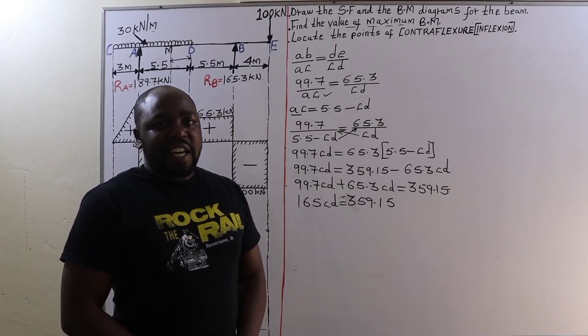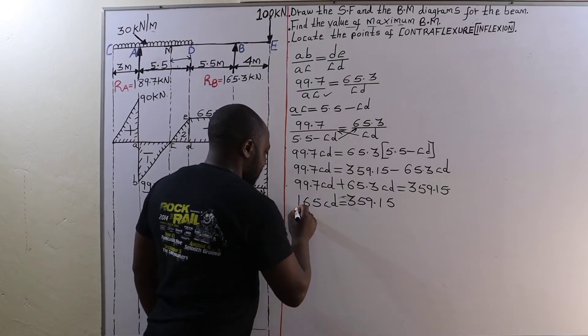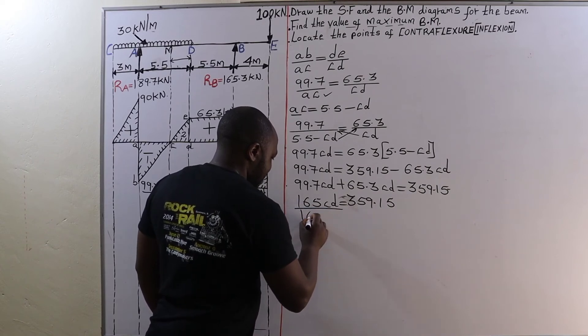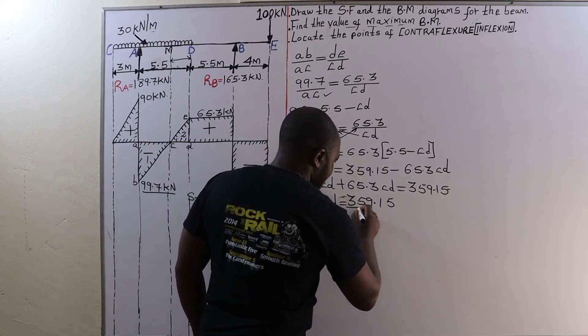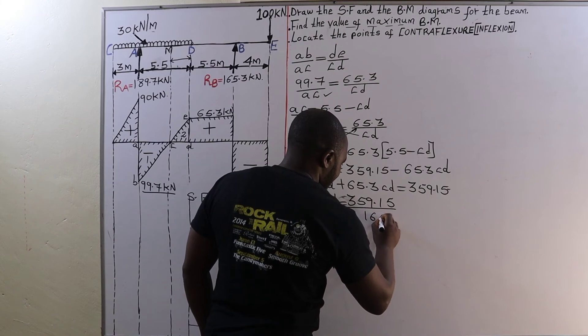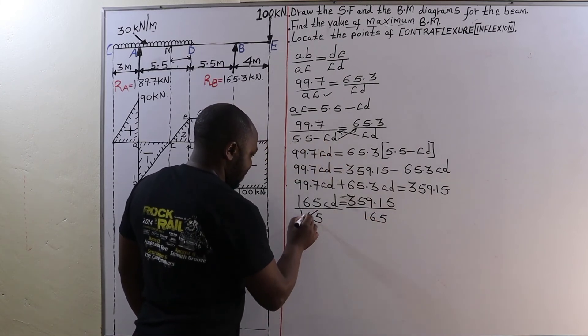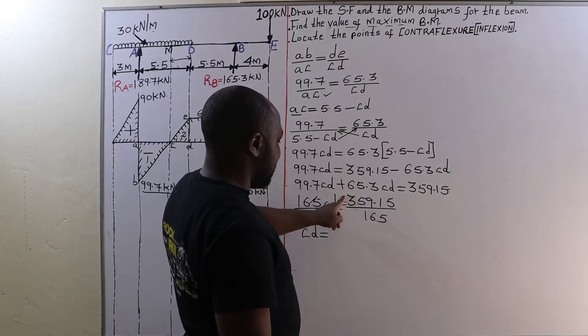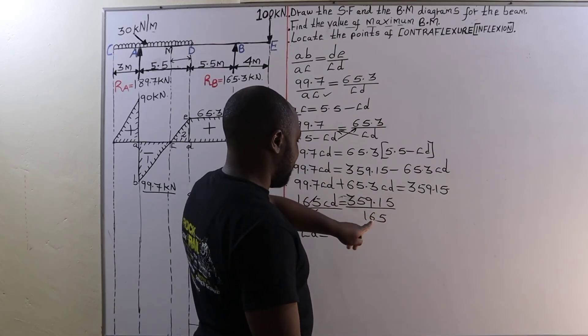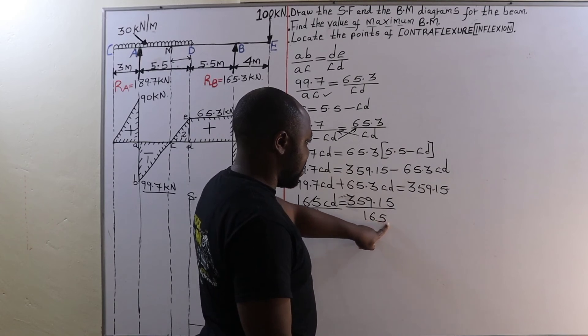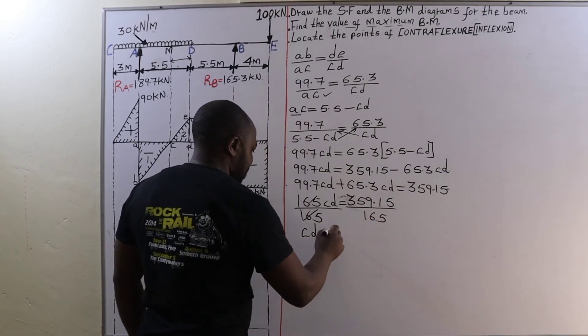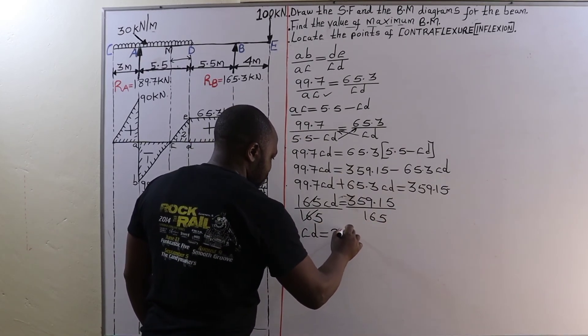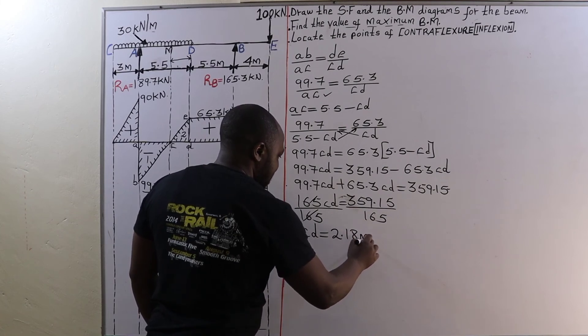To get the value of CD, we are going to divide both sides by 165. Therefore the distance from C to D, when you divide 359.15 by 165, that is going to give us approximately 2.18 meters.